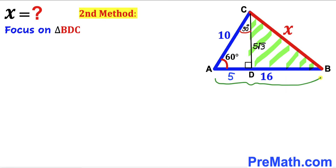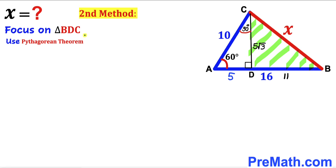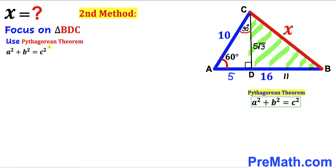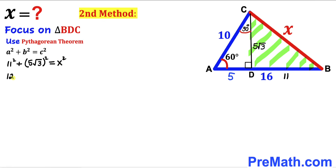The full length AB is 16 and segment AD is 5, so segment BD = 16 − 5 = 11 units. Now applying the Pythagorean theorem to triangle BDC: the hypotenuse is x, and the two legs are 11 and 5√3. So: 11² + (5√3)² = x², which gives 121 + 75 = x².